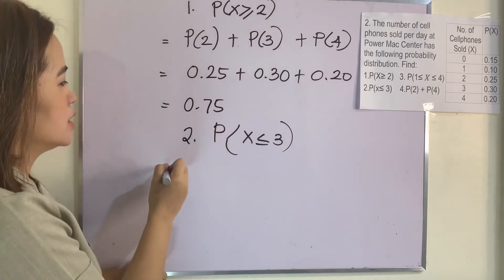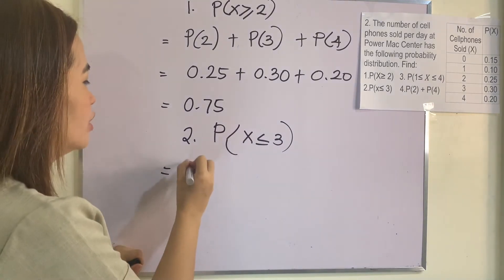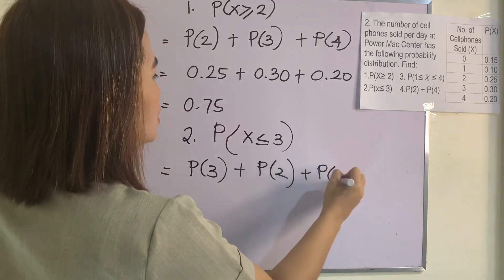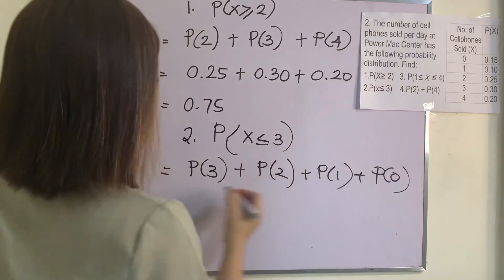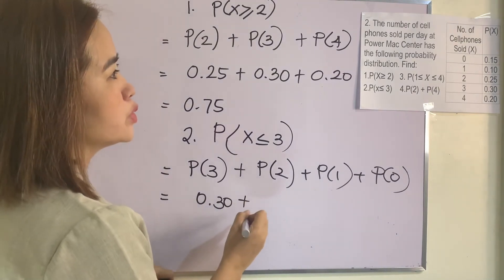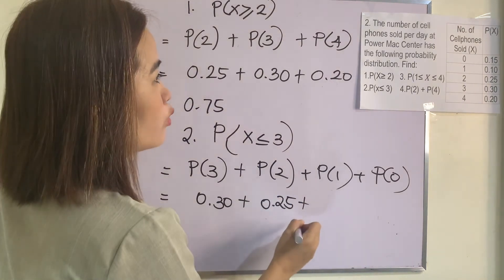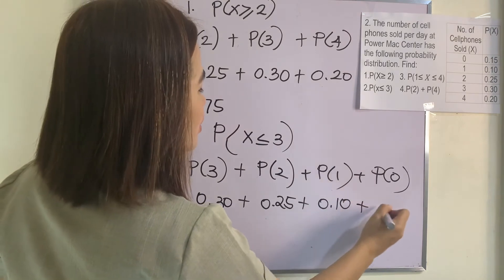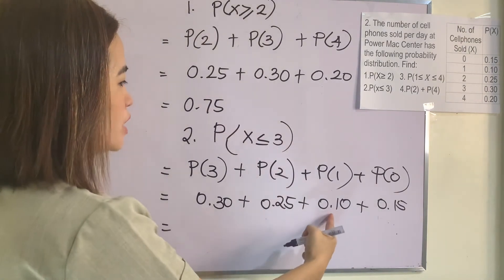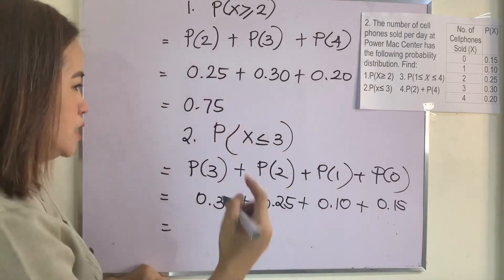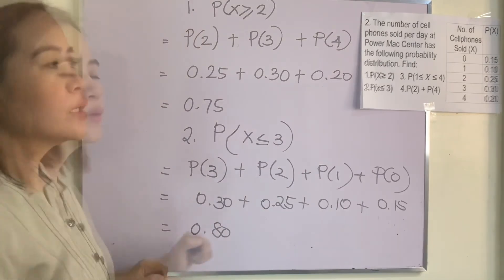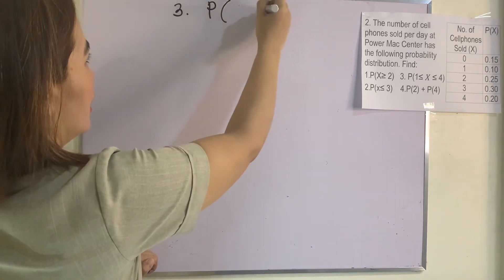For number 2, P(X ≤ 3): the values less than or equal to 3 are 3, 2, 1, and 0. So P(X ≤ 3) = P(3) + P(2) + P(1) + P(0) = 0.30 + 0.25 + 0.10 + 0.15. Adding these: 0.30 + 0.25 = 0.55, plus 0.10 = 0.65, plus 0.15 = 0.80.